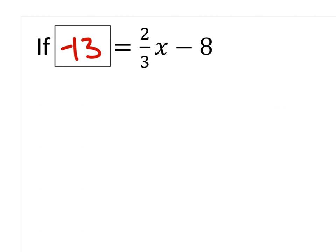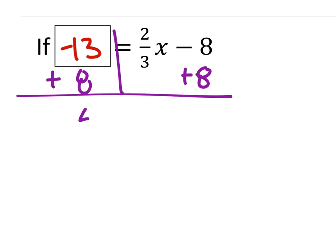All right, so to solve this thing, we want all the x's on one side and all the other values on the other side of the equal sign. So I've already got my x's on the right. I'll add 8 to both sides and I get 5 equals 2 thirds x.